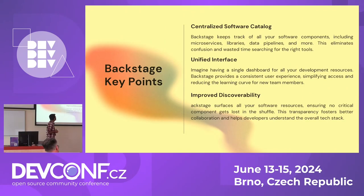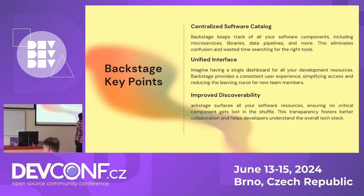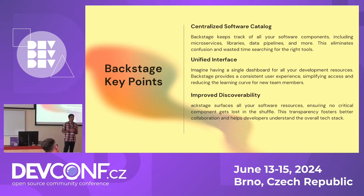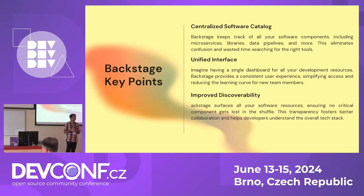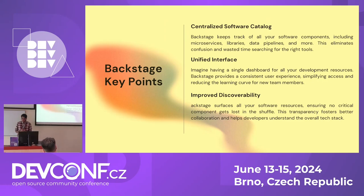The first key point of Backstage is its centralized software catalog — a specific catalog for all your software and services. For any service, you have metadata like source code, tech docs, releases, CI/CD pipelines, and ownership information. Instead of tracking everything in a Google Doc, you can build a platform where someone from another team can check what services you have, what CI/CD you have, everything at one place. This is what improved discoverability means.